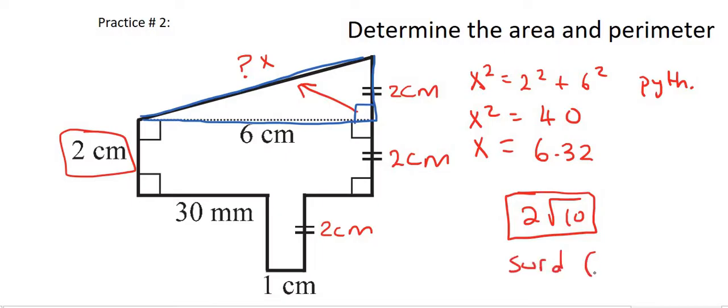If they say surd form, then you can leave it like that. Surd means having a root. But if they don't, just use two decimal places. And so that's going to be 6.32 centimeters.